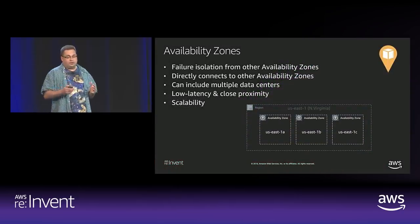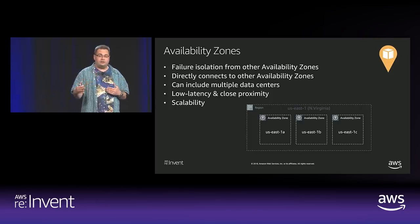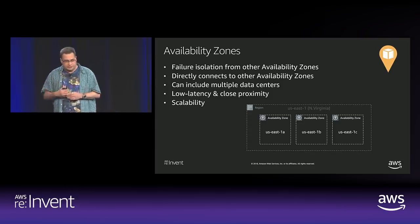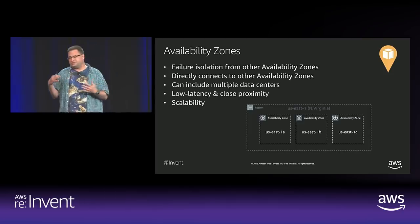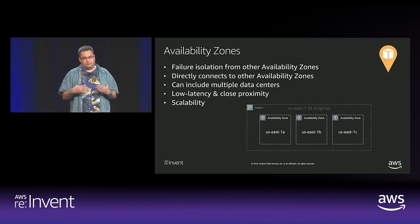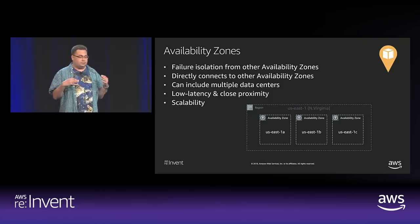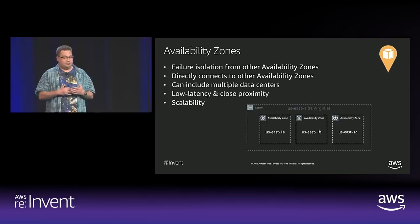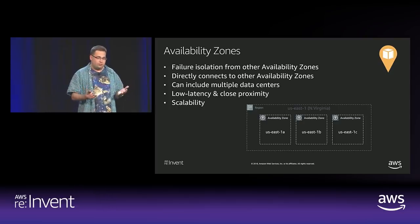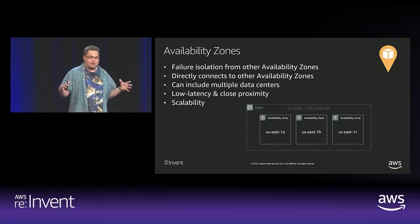One of the concepts we have is availability zones. Availability zones provide failure isolation from other availability zones within a region. They also have direct connectivity between the availability zones. Availability zones themselves can include one or multiple — typically many — data centers as part of them. The interconnectivity between data centers within an availability zone is built for low latency, and they're in close proximity. A critical part is scalability — an availability zone can't be capped; we have to be able to scale it out further and further.